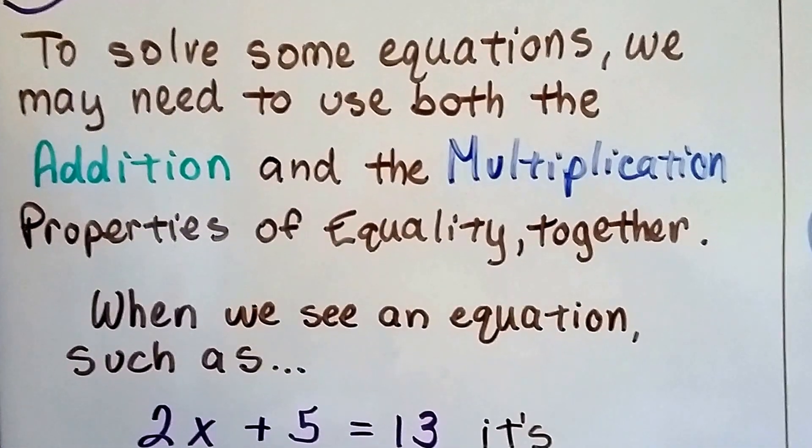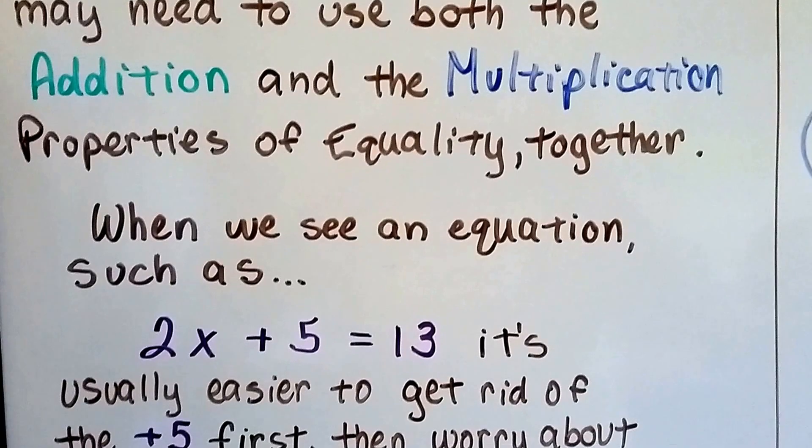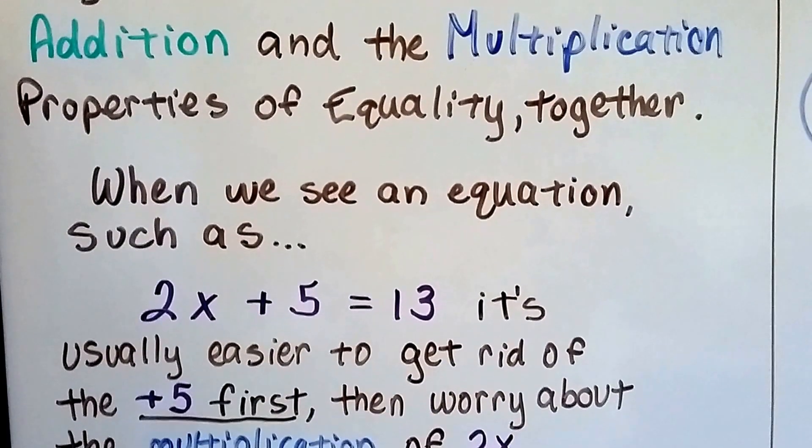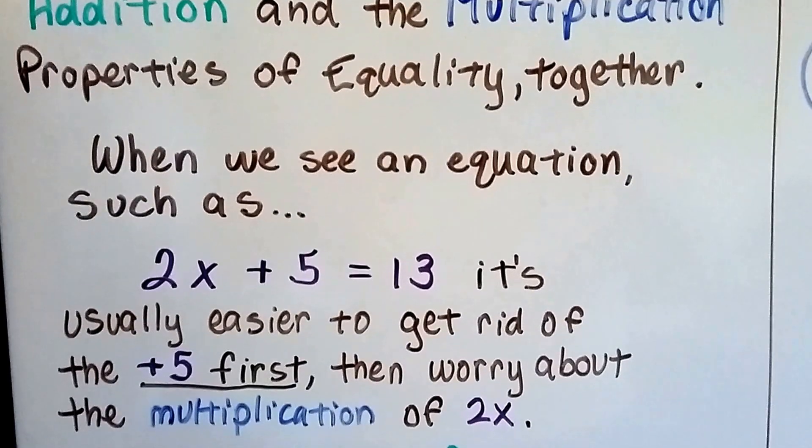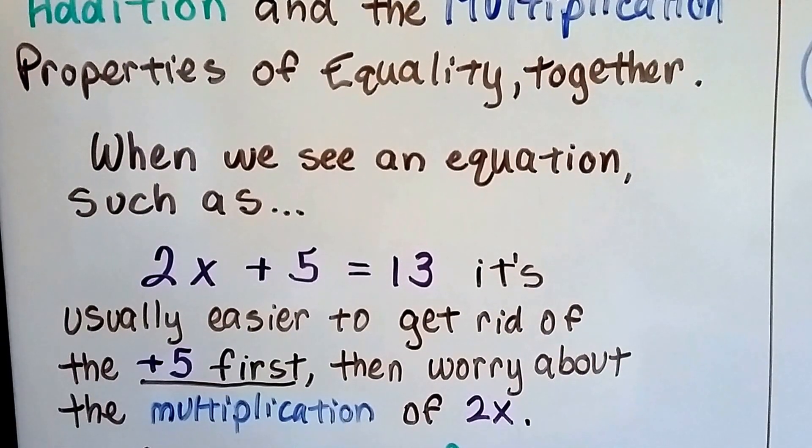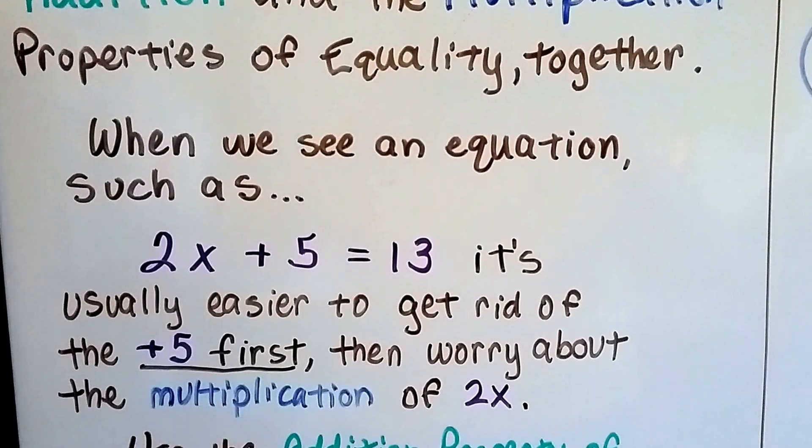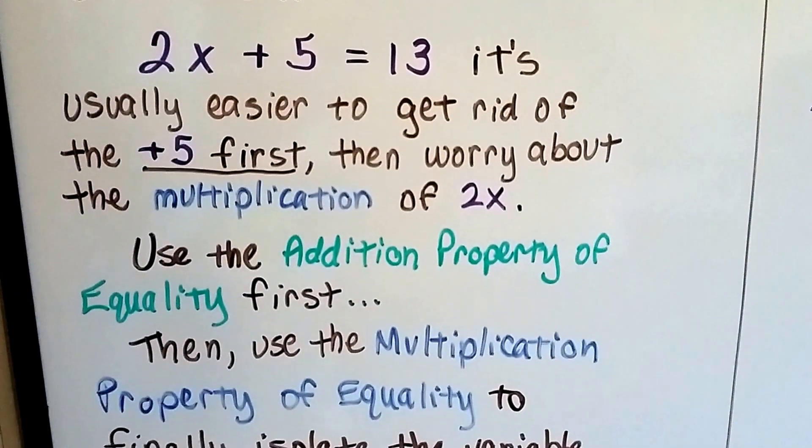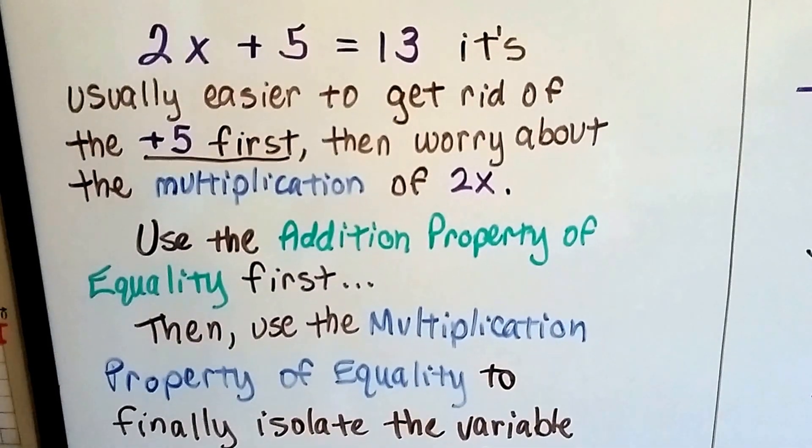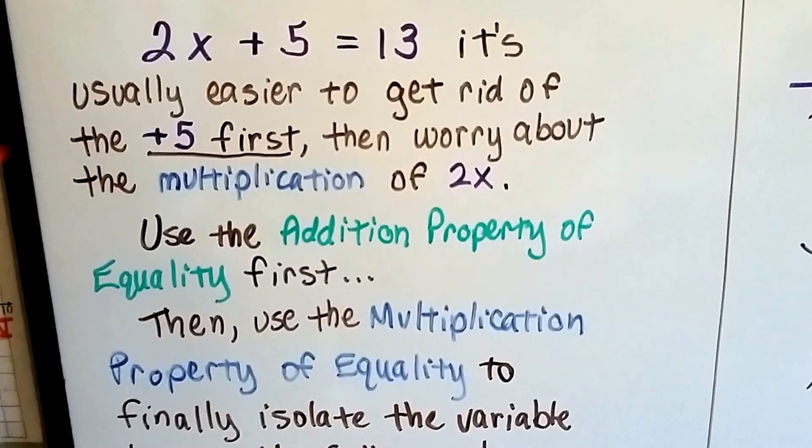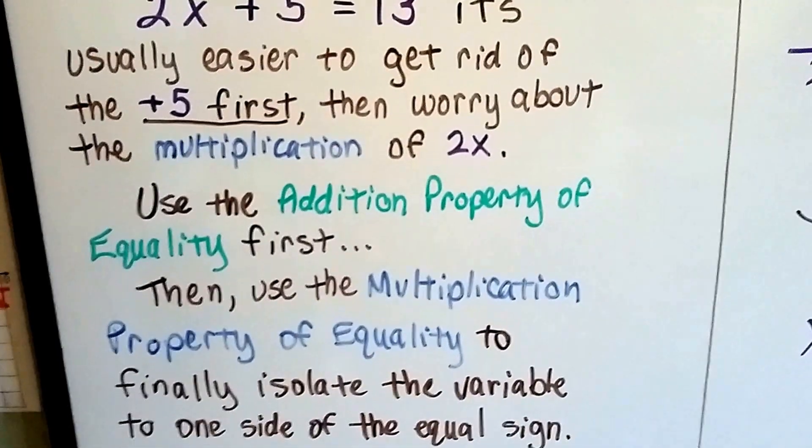To solve some equations we may need to use both the addition and multiplication properties of equality together. When we see an equation such as 2x plus 5 equals 13, it's easier to get rid of that plus 5 first, then worry about the multiplication of the 2x. Use the addition property of equality first, and then use the multiplication property of equality, multiplying by the reciprocal, to get rid of the 2.